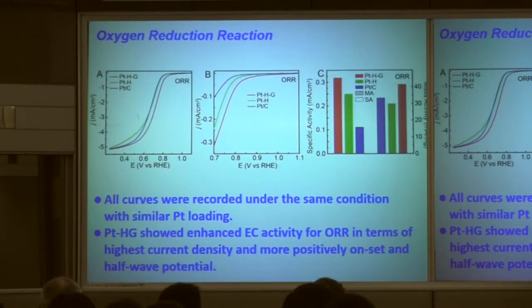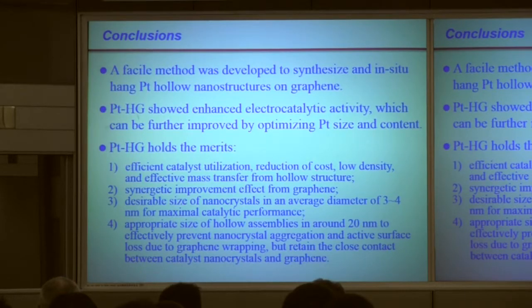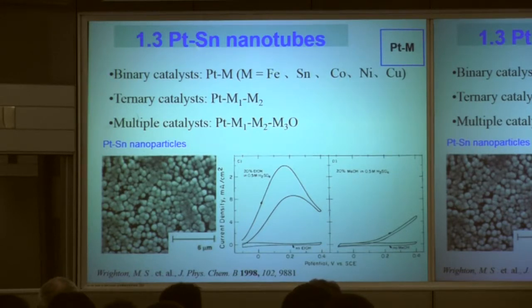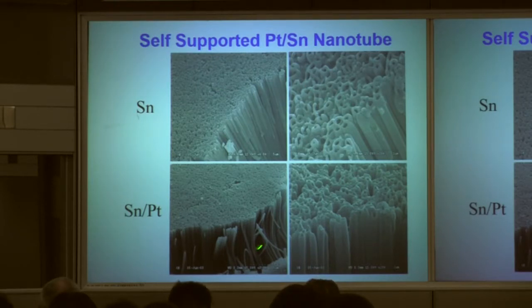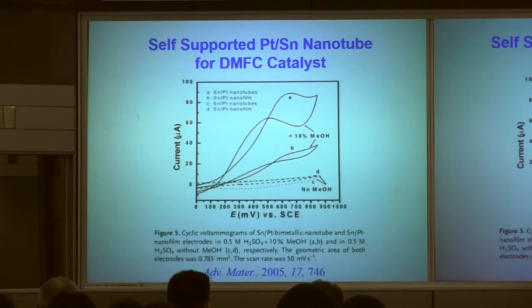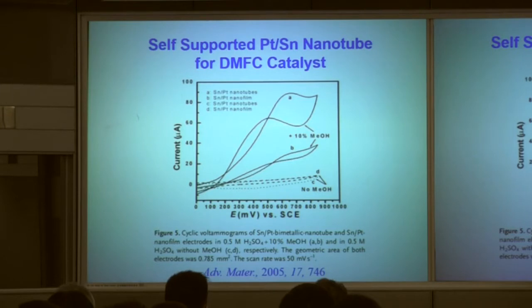We also study the oxygen reduction reaction, and every result shows this composite material is the best material. We also developed some alloys, like platinum-tin nanotubes, and also cobalt, nickel, and copper alloys. We found that all of these alloys have better electrochemical performance compared with tin, copper, and some other materials. Here is the platinum-tin nanotube — a single nanotube — and the electrochemical property shows that this platinum-tin nanotube has very good electrochemical performance. Also, the cost of the electrode material is decreased because it contains tin atoms.